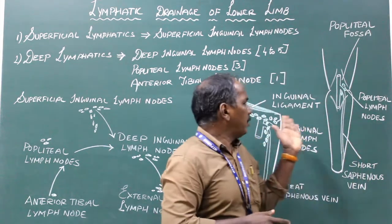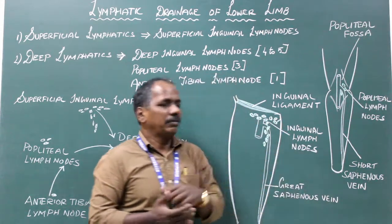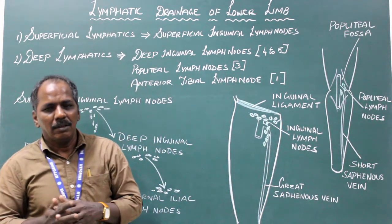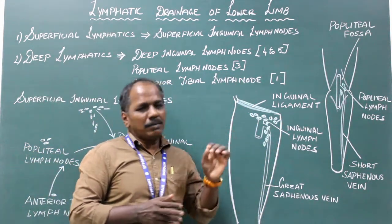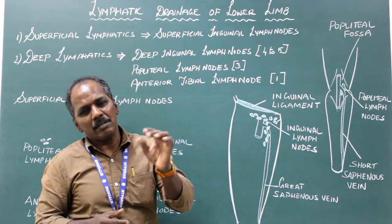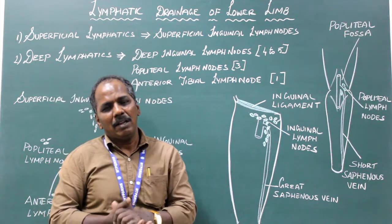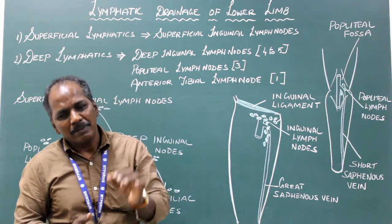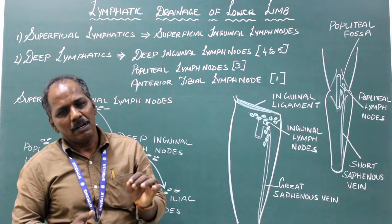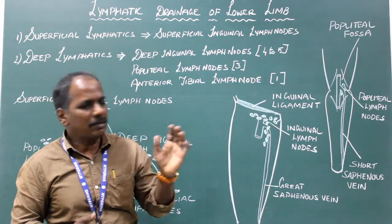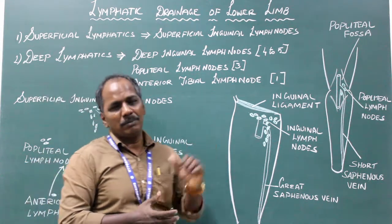Enlargement of lymph nodes in the lower limb is usually caused by infections, abscesses, or any boils in the lower limb.